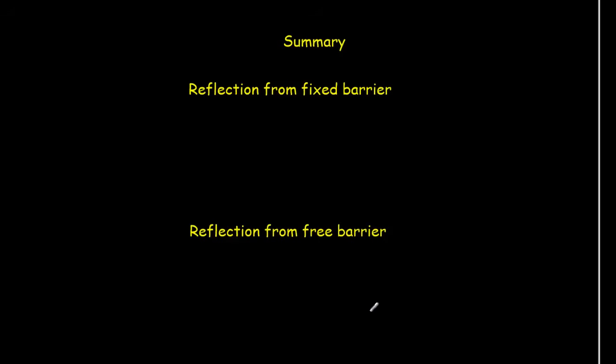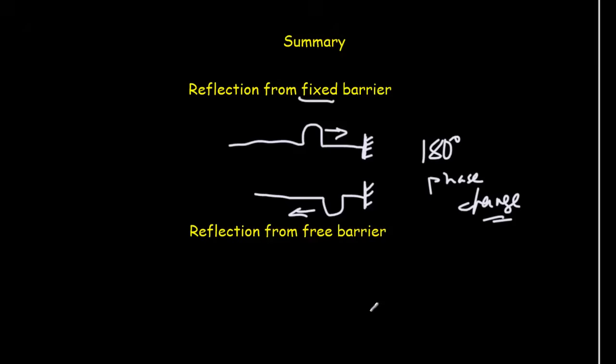So we can summarize that. If we've got a fixed barrier, and often we draw that as kind of a wall, so we've got a pulse coming in this way. So when it reflects backwards, it's going to come back on the other side. There is a 180 degree phase change, or an inversion, when you have a fixed barrier. When we had the free barrier, and I'll represent a free barrier's dotted lines here, so our pulse came in, it had an upwards on the upward side, and it came back on the same side. So there's no phase change when there is a reflection from a free barrier.